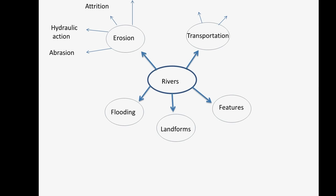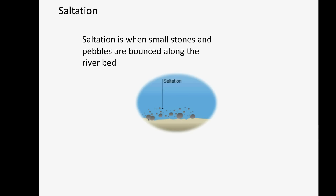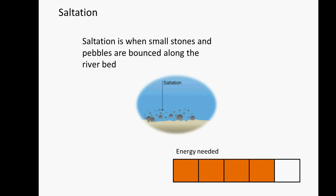Now to add them to the steadily growing mind map. If small stones and pebbles are too heavy to float, they are transported by saltation — they bounce along the river bed pushed by the current. Because the loads are heavy in suspension, the energy bar is higher.